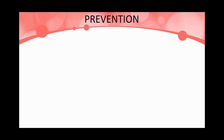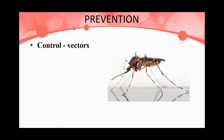Prevention of filariasis: the best way to prevent this disease is to control the vectors, that is, mosquitoes. Use a mosquito net while sleeping. As discussed in the malaria video, we can also control mosquitoes by using their biological enemies.